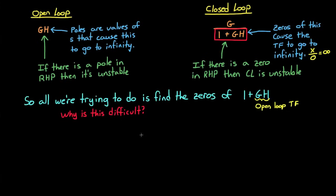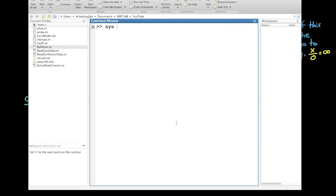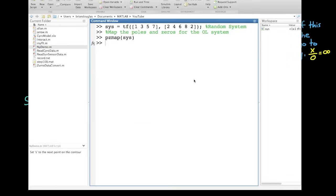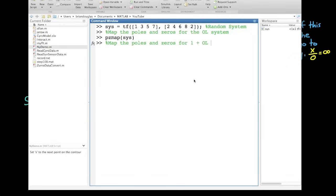So let me show you something real quick in MATLAB. I'll just generate a random transfer function called sys. I'll plot the locations of the poles and zeros for this open-loop system, and then right next to it I'm going to plot the poles and zeros of 1 plus the open-loop system.